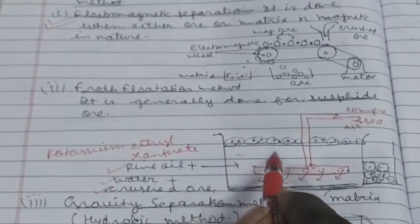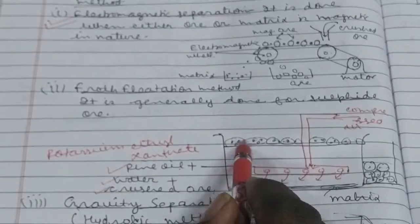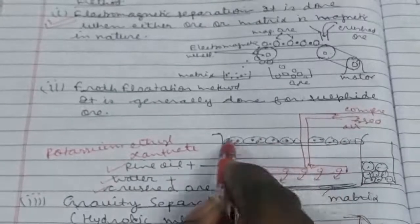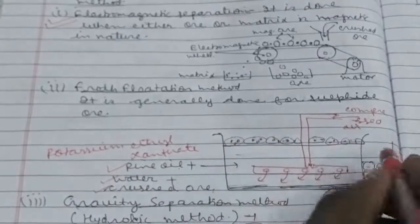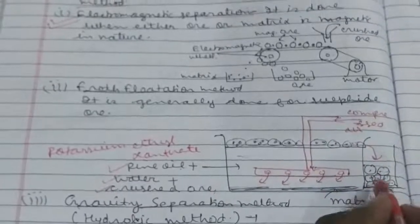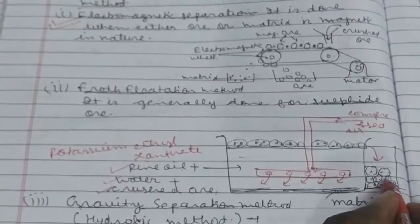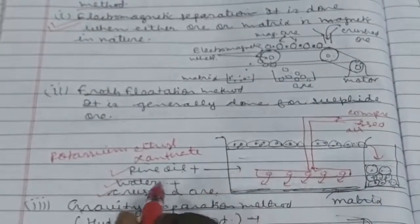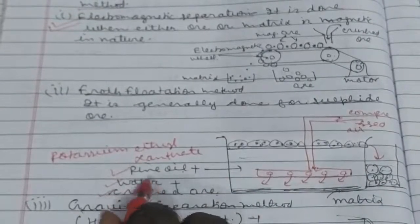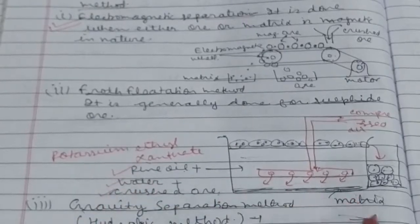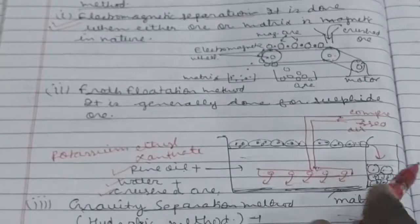After few times, you will see that ore will come with pine oil in form of froth on the upper surface. Because foam is lighter, it will collect on the top, which is then collected to the container next to it. After few times, the froth will melt and you will get the ore. While the matrix will be heavier by that water and settle down. The matrix will remove behind and the ore will collect in the next container.